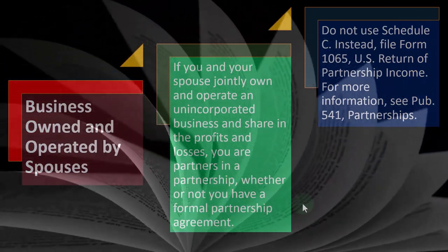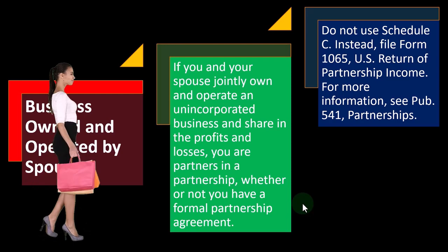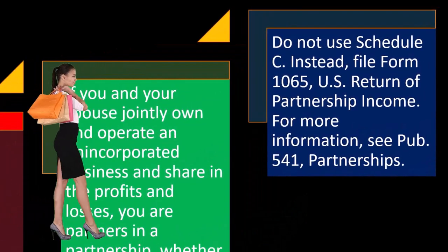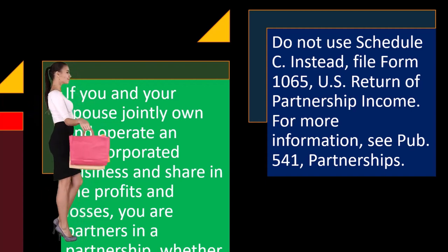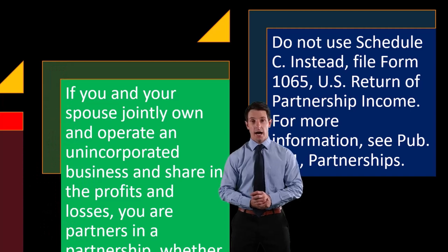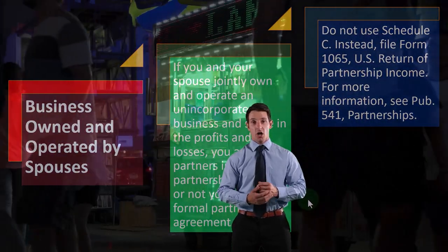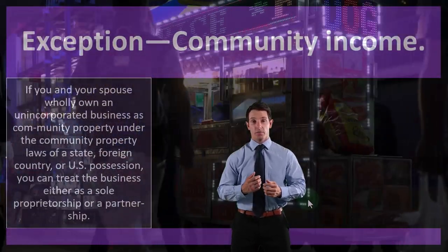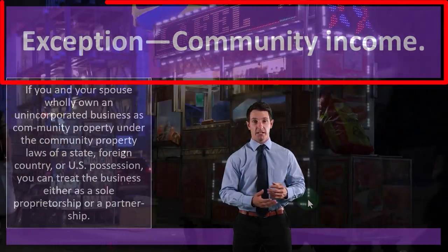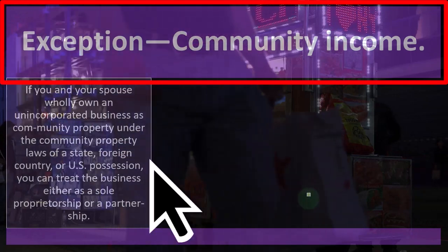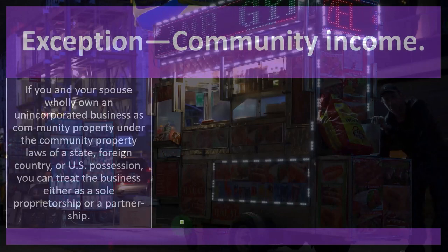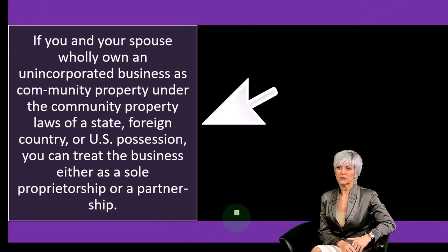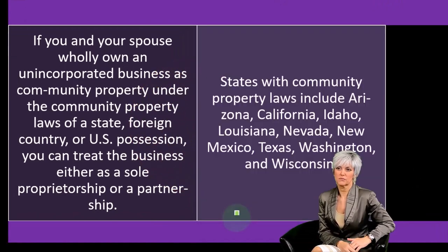Do not use a Schedule C — instead file Form 1065, U.S. Return of Partnership Income. For more information, see Publication 541 on partnerships. There is an exception: if two spouses own what would otherwise be a sole proprietorship, it may be designated a partnership. However, if you and your spouse wholly own an unincorporated business as community property under the community property laws of a state, foreign country, or U.S. possession, you can treat the business either as a sole proprietorship or a partnership.